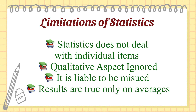Statistics largely deals with averages, and these averages may be made up of individual items radically different from each other. For example, if the average mark of two students for three tests is the same, say 30, it does not mean that both of them have scored the same marks. There may be much variation between the two. While the marks of student A might have increased from 20 to 30 and then to 40, student B's marks might have decreased from 40 to 30 and then to 20.